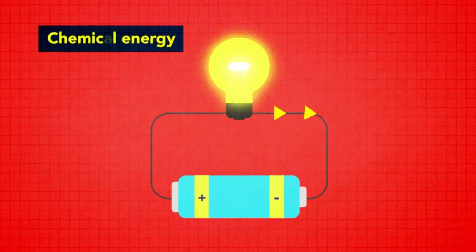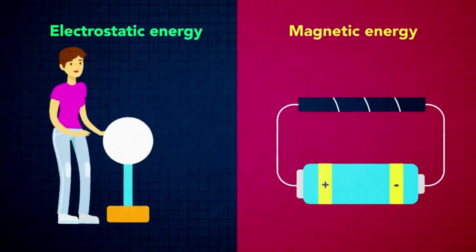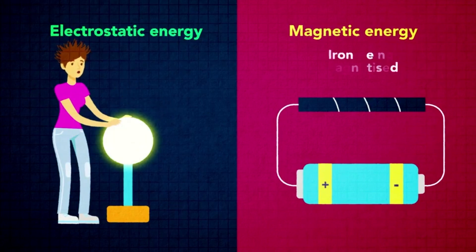Batteries are stores of chemical energy that create current and some objects like a van de graaf generator are statically charged while others can be magnetized and store magnetic energy.